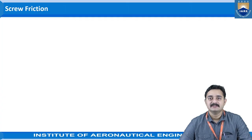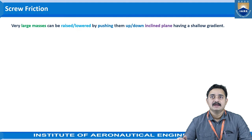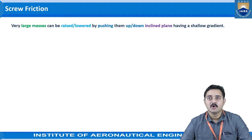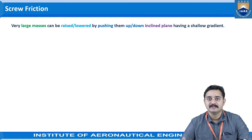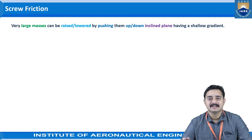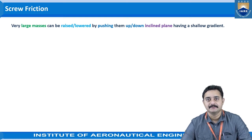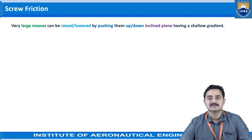First, let us understand what a screw is. A screw is used for lowering or raising very large masses by pushing or pulling up or down an inclined plane having a shallow gradient. If you imagine a two-dimensional rectangular plane which is wound against a cylinder, it can be treated as a screw, and the load that needs to be raised or lowered is pushed up or down that inclined plane. Let us see an animation to understand what screw friction — and what a screw really is.